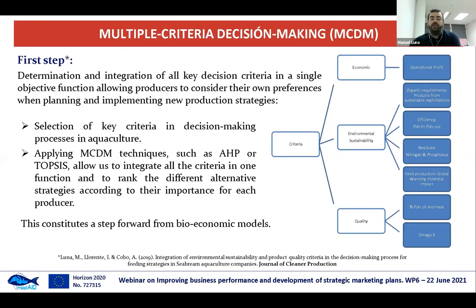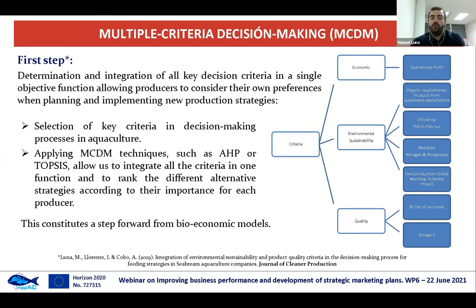The first step was to determine the main decision criteria and their integration in a unique objective function. We found three groups of criteria. Firstly, the economic group represented by the operational profit. Then, all the aspects related with the environmental sustainability of the farm, such as the efficiency ratio and the global warming potential impact. And then, some criteria regarding the quality of the final product, such as the percentage of fish oil and fish meal in the last month, or the omega-3 transmission.